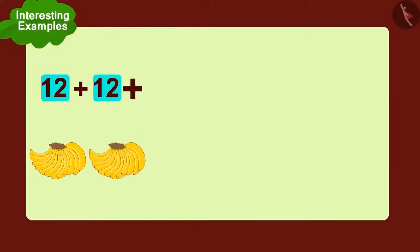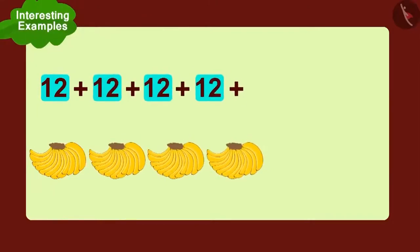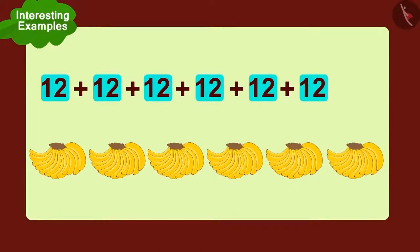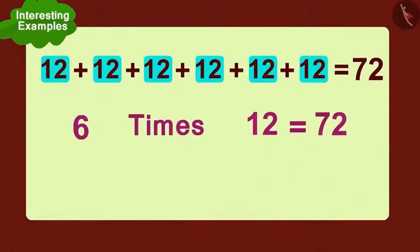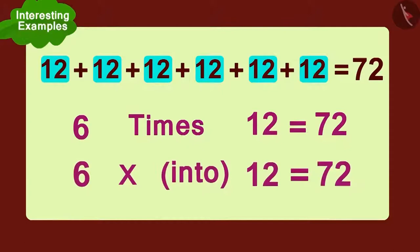Twelve added to twelve, twelve added to twelve, again add twelve, again add twelve, again add twelve, and finally add one more twelve. How much is that? Seventy-two. Can you write this in another way? Six times twelve, or six multiplied with twelve.